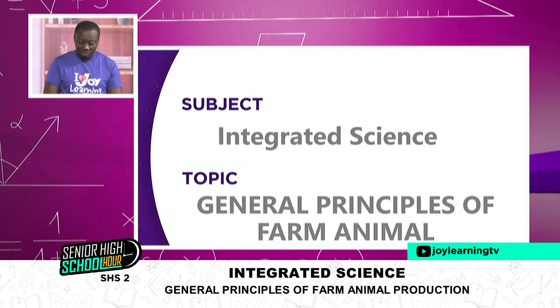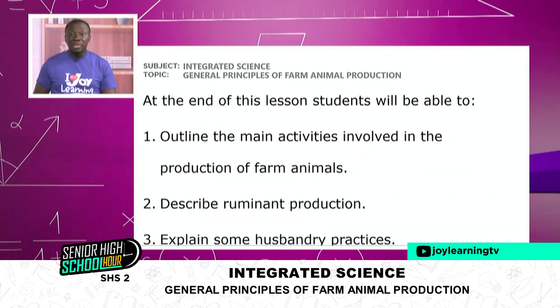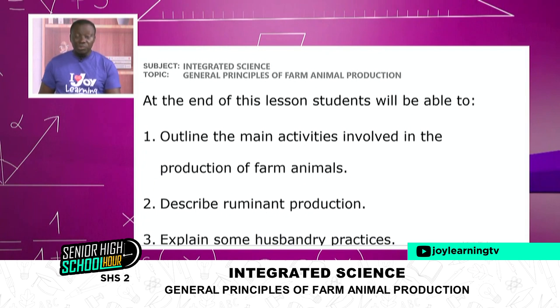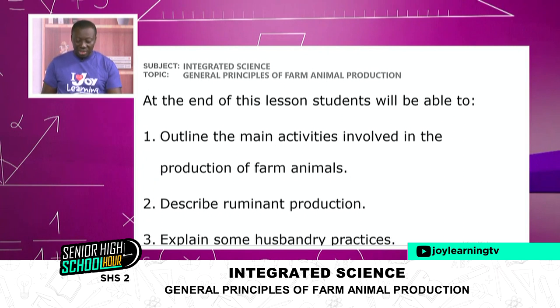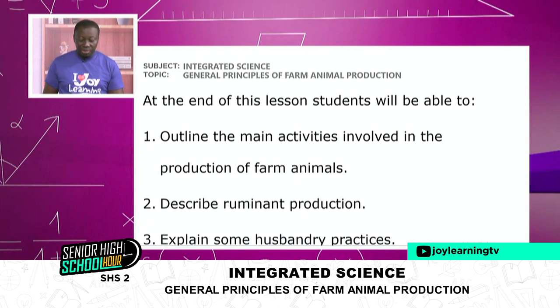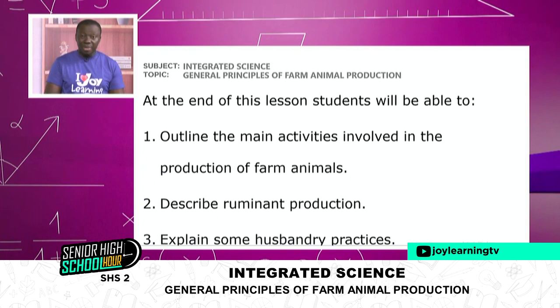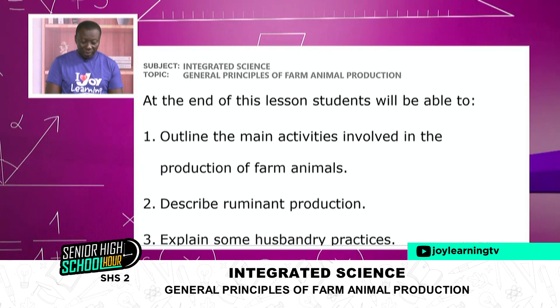General Principles of Farm Animal Production. Let us look at our learning objectives. By the end of today's lesson, you will be able to outline the main activities involved in the production of farm animals, describe ruminant production, and if time permits, explain some husbandry practices. So we're looking at a general outline, description of ruminant production, and then husbandry practices.